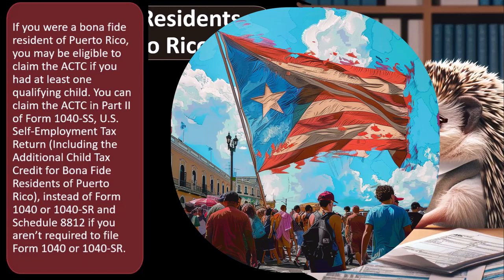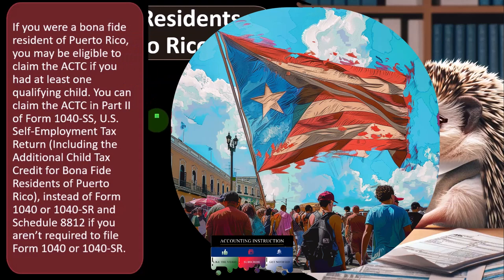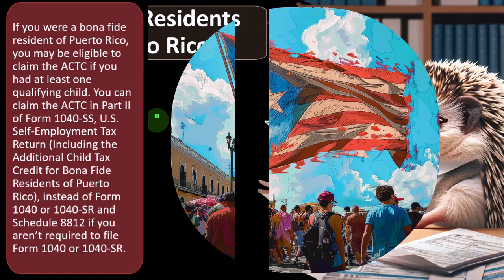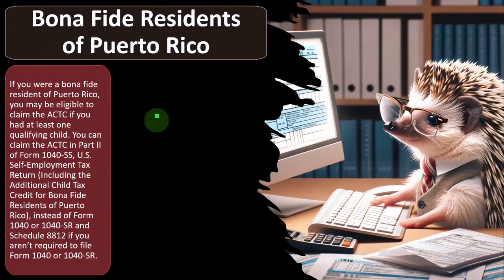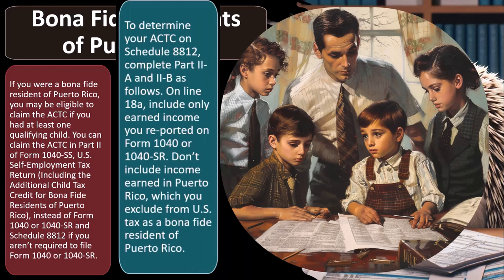Bona fide residents of Puerto Rico may be able to claim the ACTC additional child tax credit. When talking about different countries, there are scenarios specific to those areas depending on tax treaties. That might be a place of specialization or one you're not comfortable with. If you had at least one qualifying child, you can claim the ACTC in Part 2 of Form 1040-SS, U.S. Self-Employment Tax Return, including the additional child tax credit for bona fide residents of Puerto Rico.